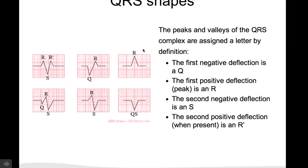There are definitions of how you name all these peaks and valleys of the QRS complex. The first positive deflection is the R wave. The first negative deflection is a Q wave.